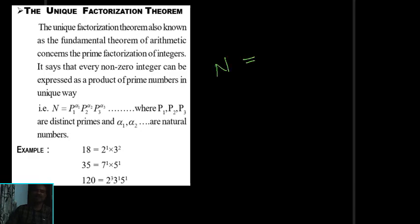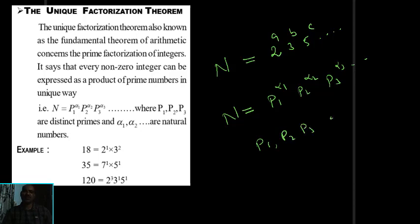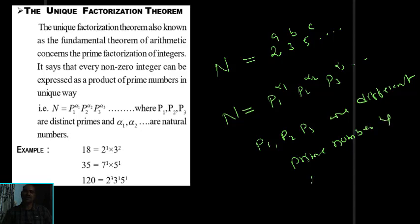The unique prime factorization theorem states that any composite number n can be written in the form of 2^a × 3^b × 5^c and so on, where a, b, c are natural numbers. In other words, any composite number n can be written as p1^α1 × p2^α2 × p3^α3 and so on, where p1, p2, p3 are distinct prime numbers and α1, α2 and so on are natural numbers.